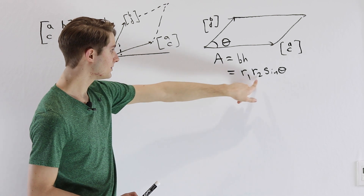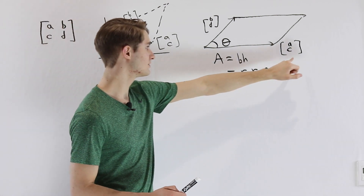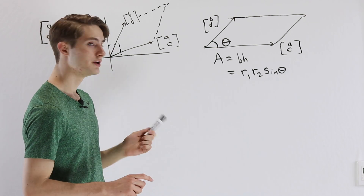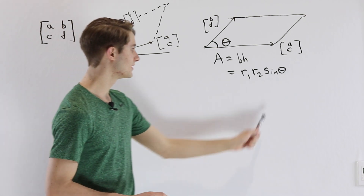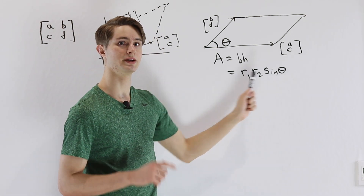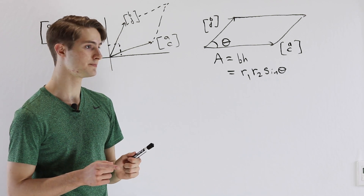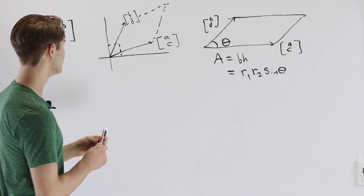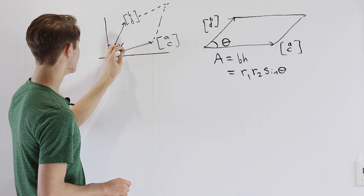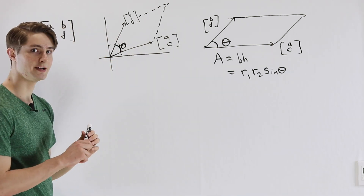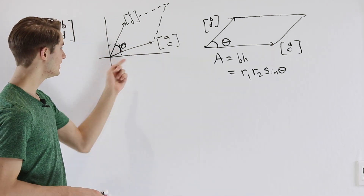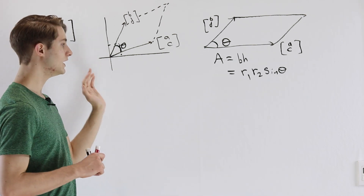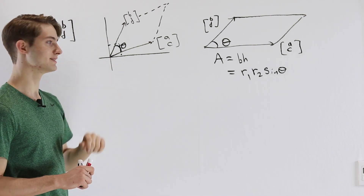So this is the area we're looking for: R1 times R2 times sine of theta. We can find R1 and R2 using the Pythagorean theorem. The tricky part is the sine of theta — we have to figure out what theta is. To do that, let's go back to our original diagram. The theta we want is the angle on the inside between the two vectors.